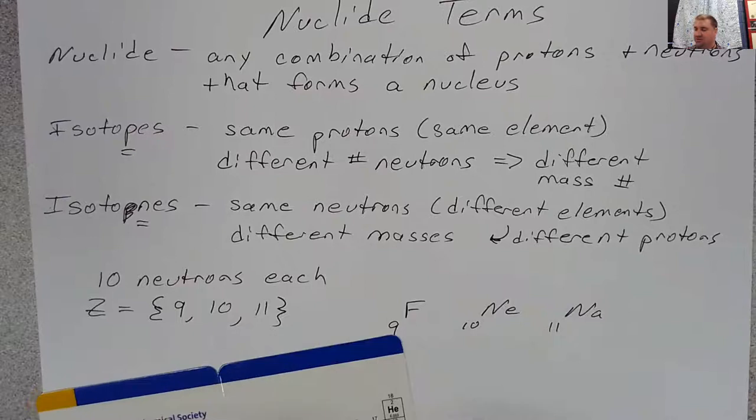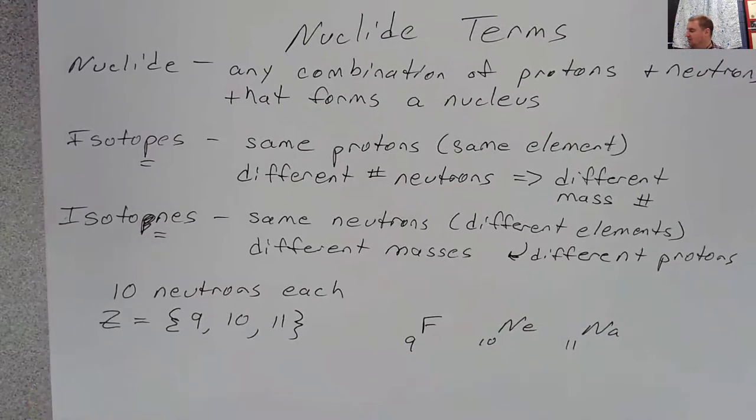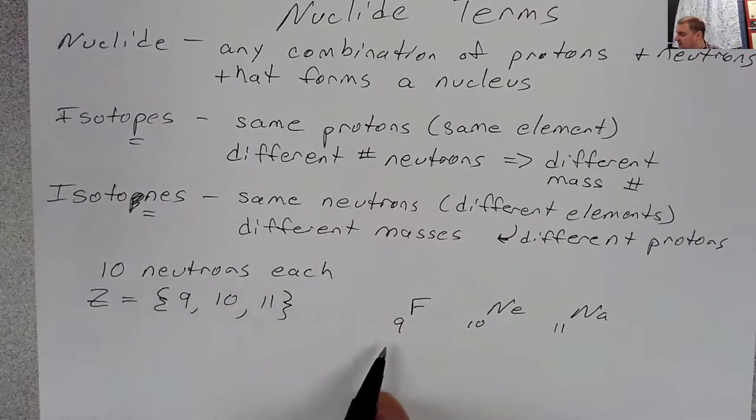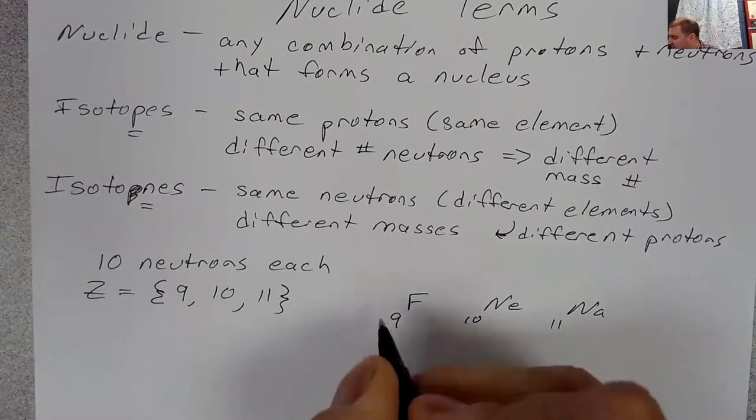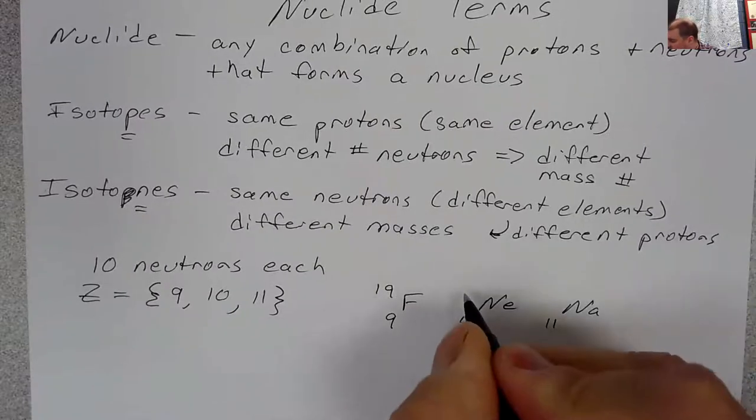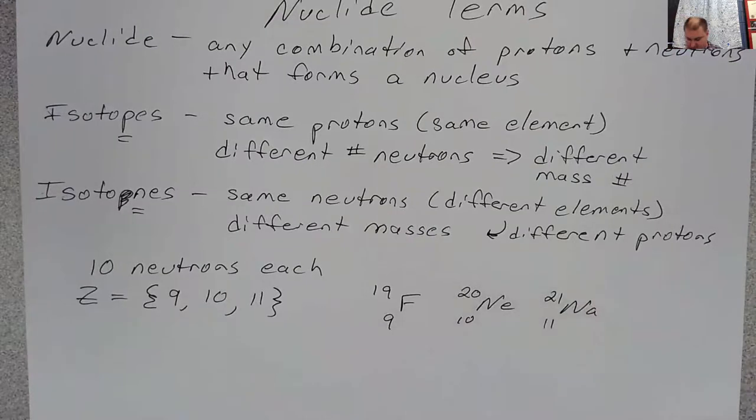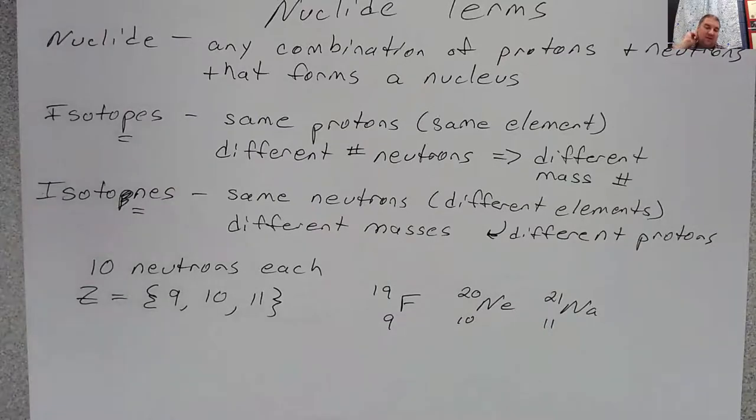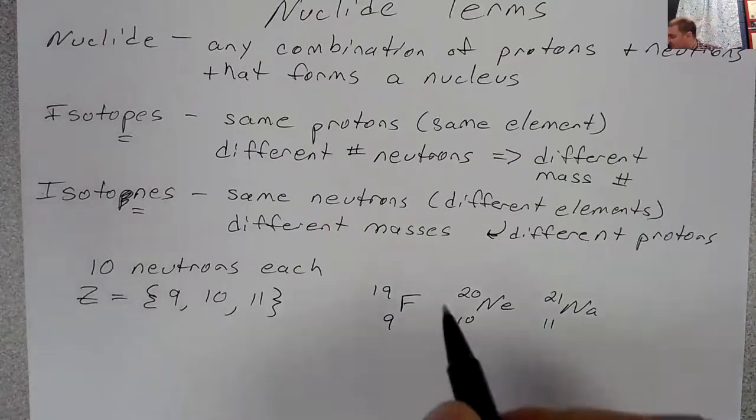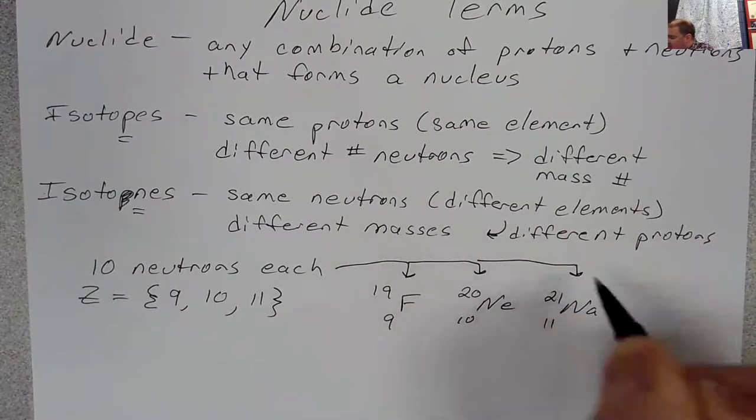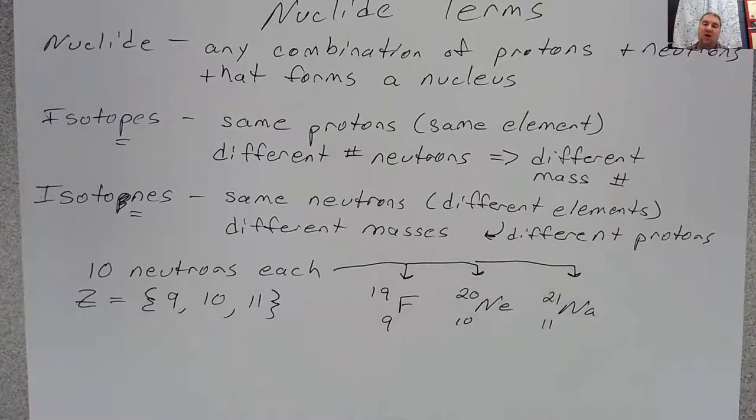If they have 10 neutrons each, then what would their mass numbers be? Well, all you'd have to do is add 10 neutrons to the atomic number, and you'd see that this would be fluorine 19, neon 20, and sodium 21. Those are reasonable mass numbers for these nuclides. And all of these nuclides, because they all have 10 neutrons each, they are all examples of isotones.